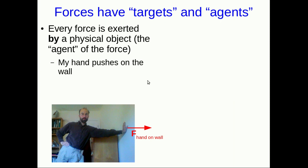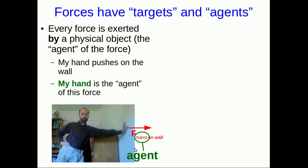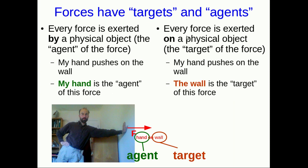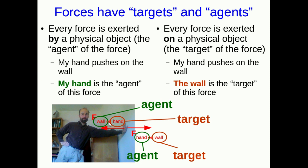We have some terminology to talk about this. We say that every force is exerted by one physical object, and we call that the agent. So if my hand pushes on the wall, my hand is the agent — it's the thing doing the pushing. Every force is also exerted on some other physical object, and we call that the target of the force. So if my hand pushes on the wall, the wall is the target. And for the force that the wall exerts back on my hand, the wall is the agent and my hand is the target.